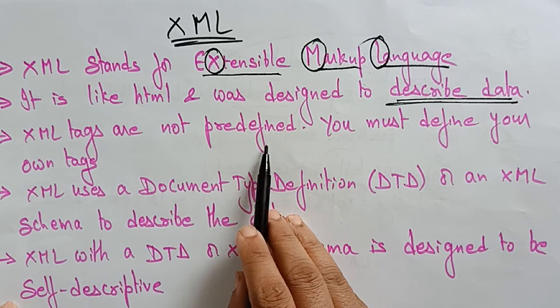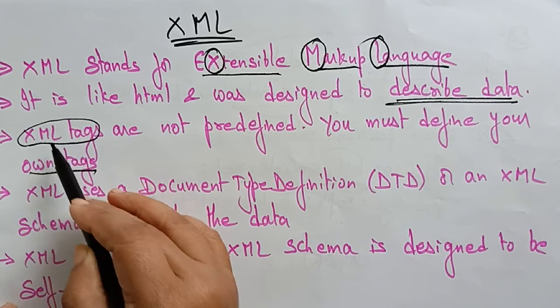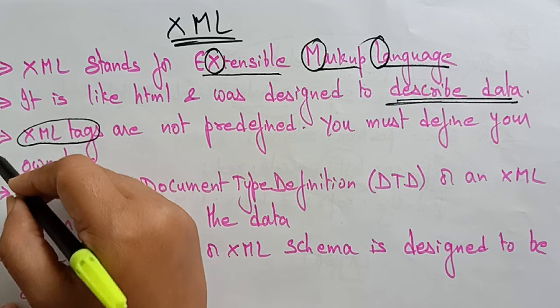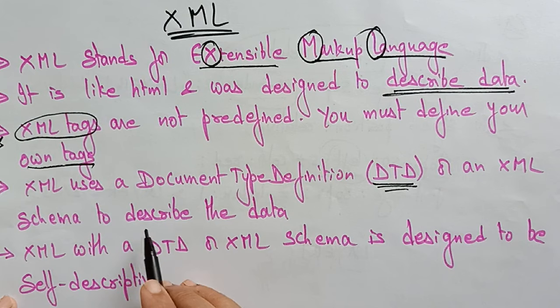XML tags are not predefined; you must define your own tags. That is the main feature of XML documents. XML uses a Document Type Definition (DTD) or an XML schema to describe the data.